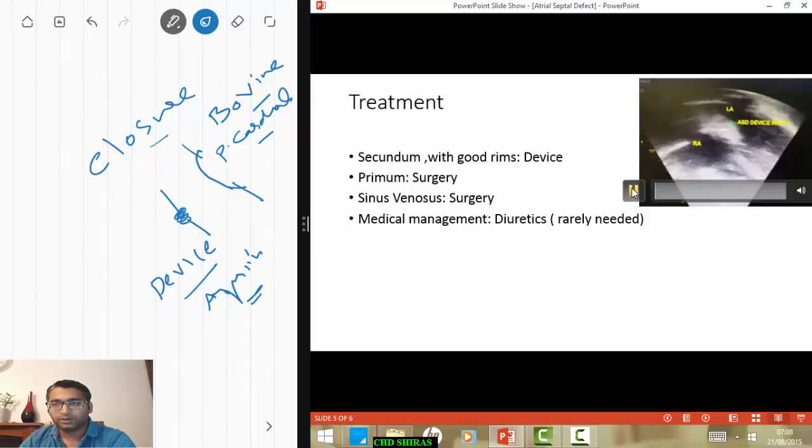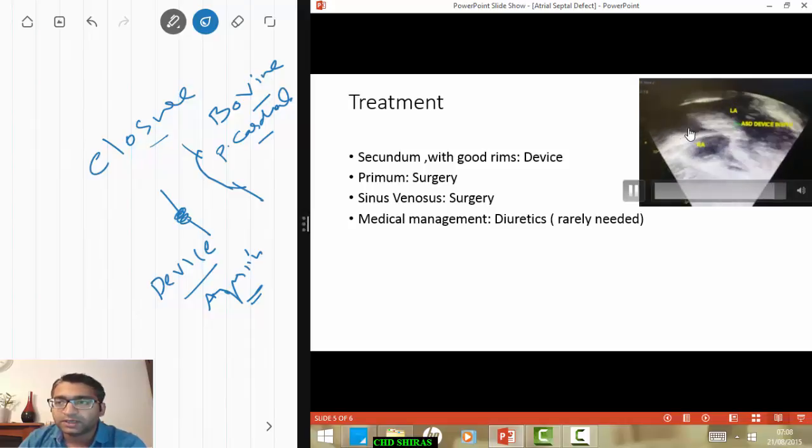Right, so this is an example of the earlier case. You know the video I showed earlier, that's LA and the RA, and now the patient has got a device. The patient now has a device over there, which has sort of... you can see it looks quite bulky now. This is a few months after it's been inserted and the endothelium would have grown over it.